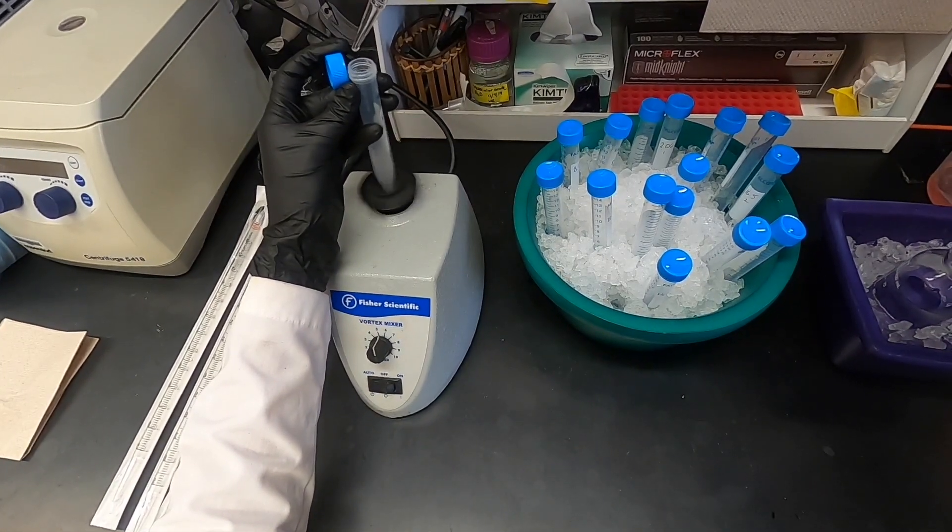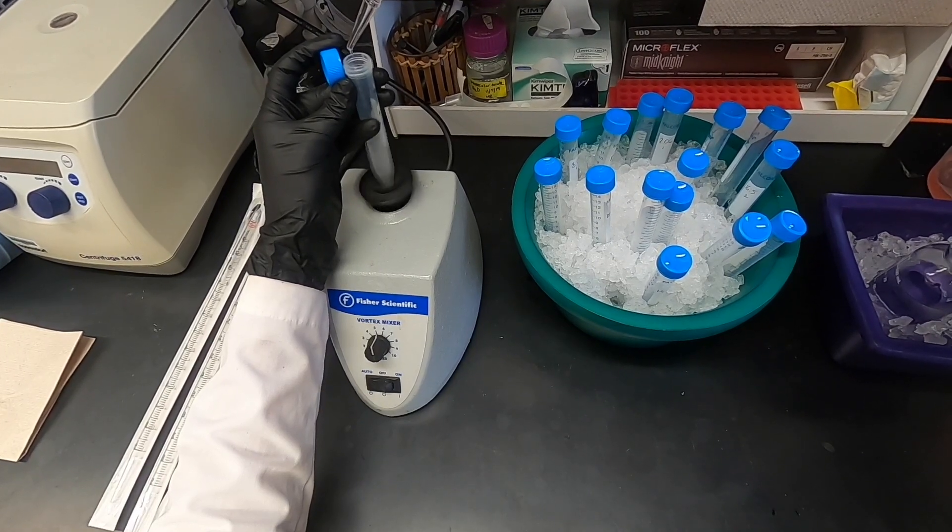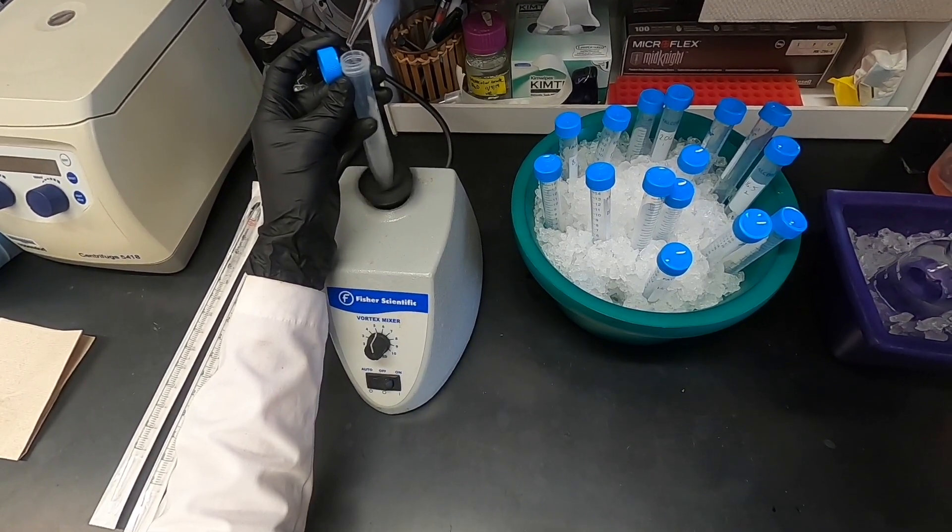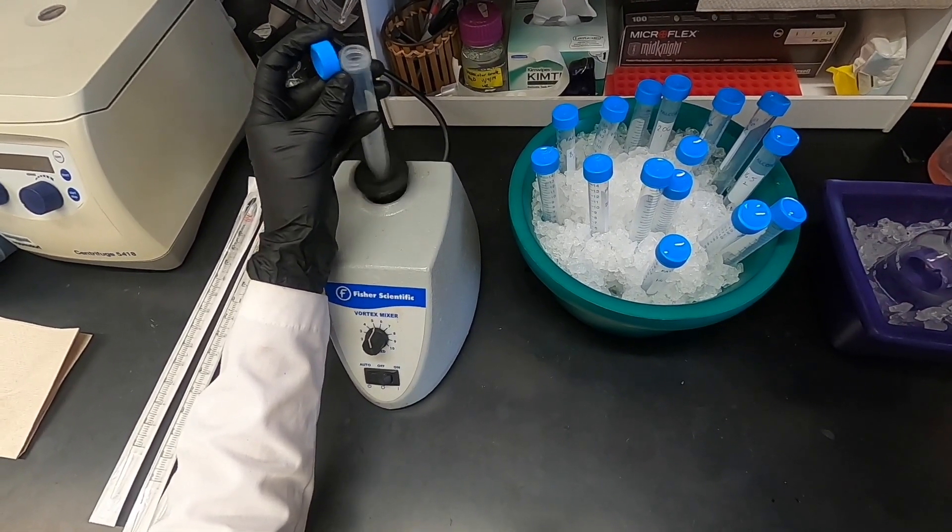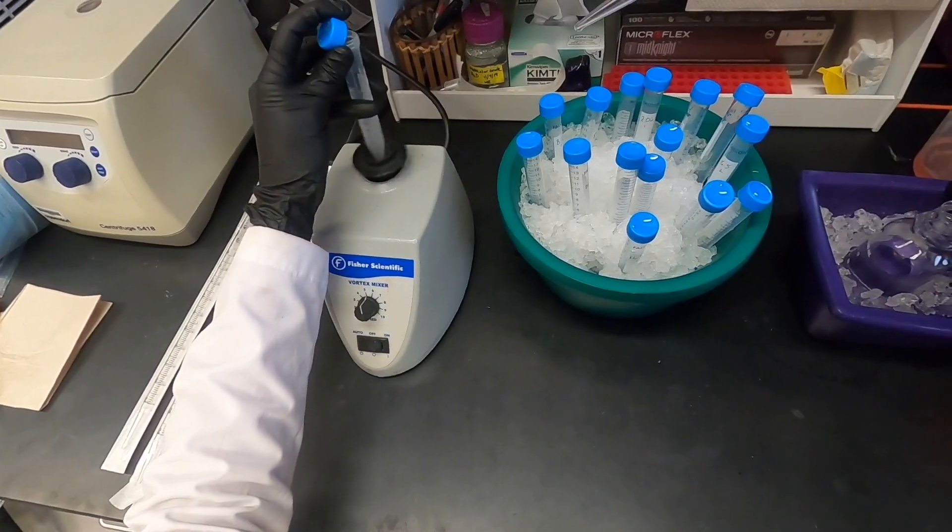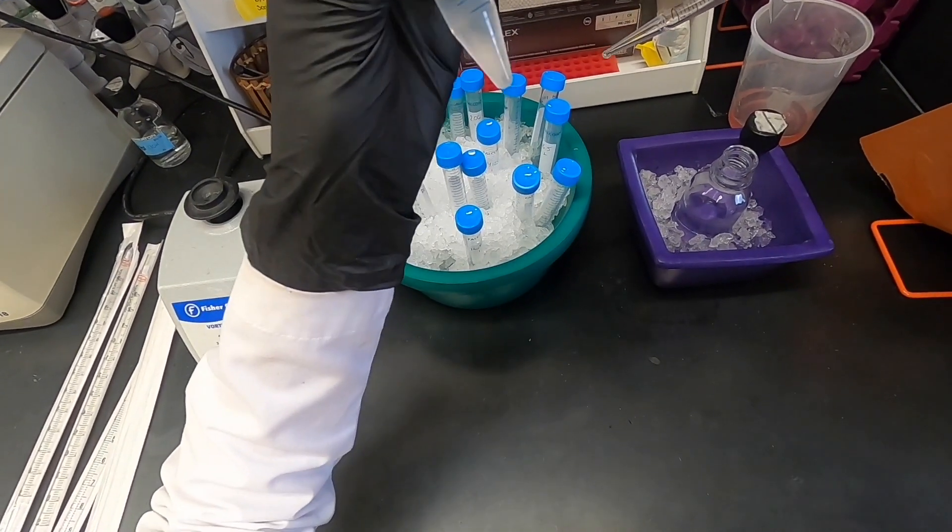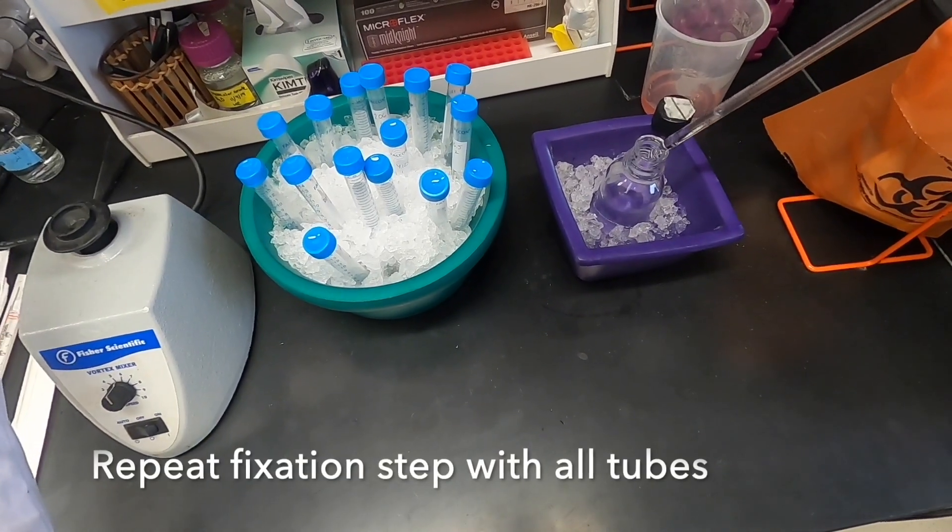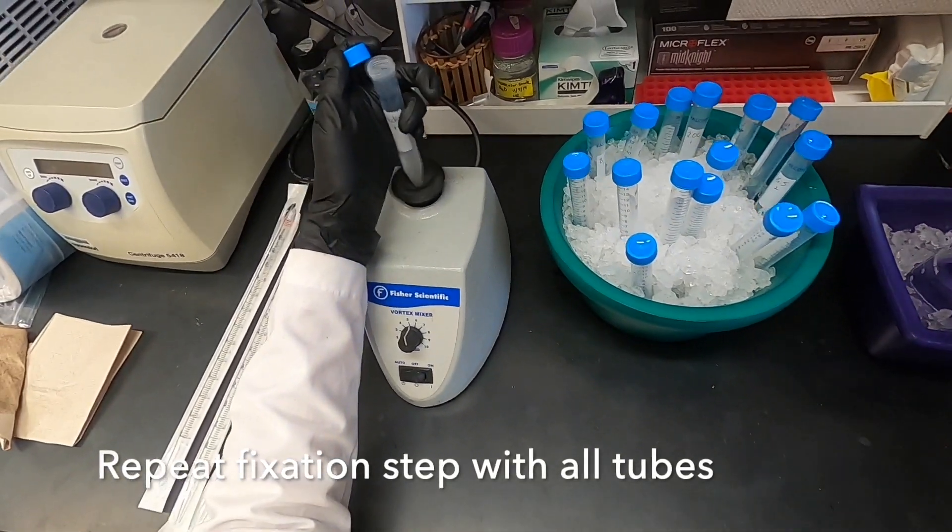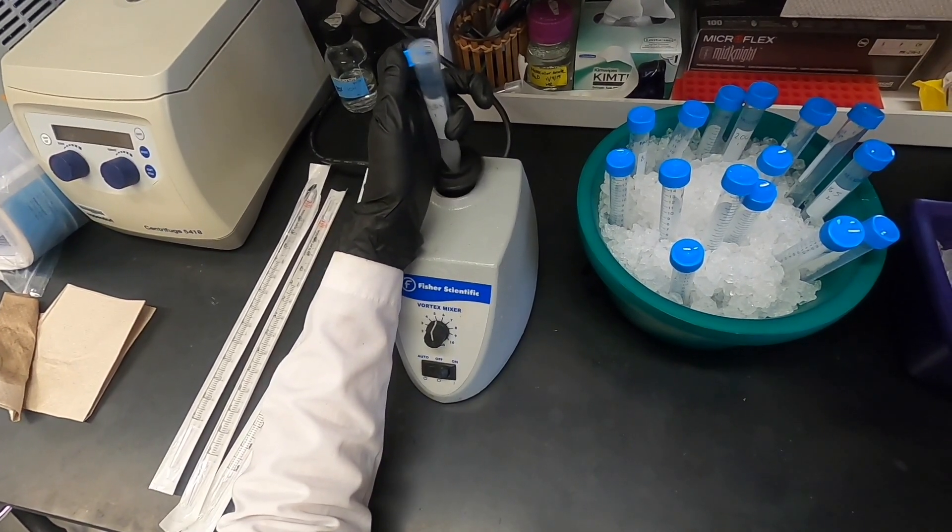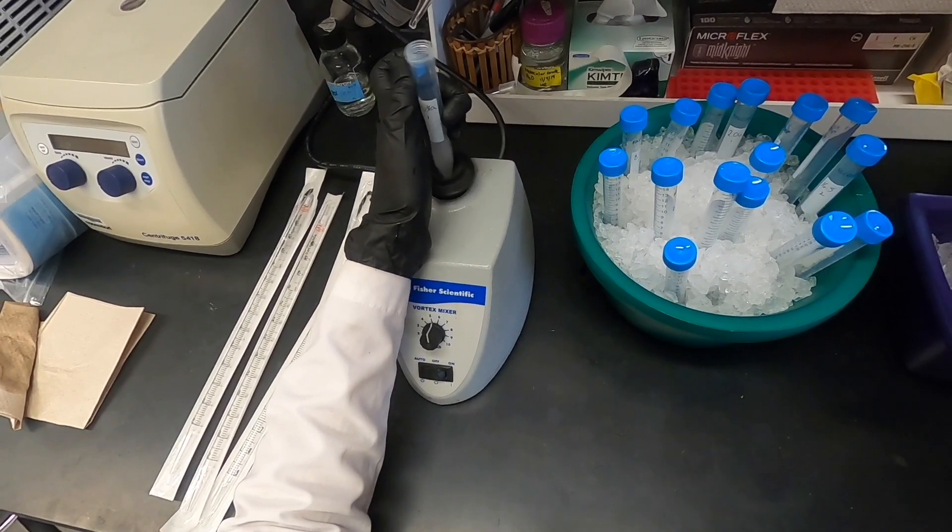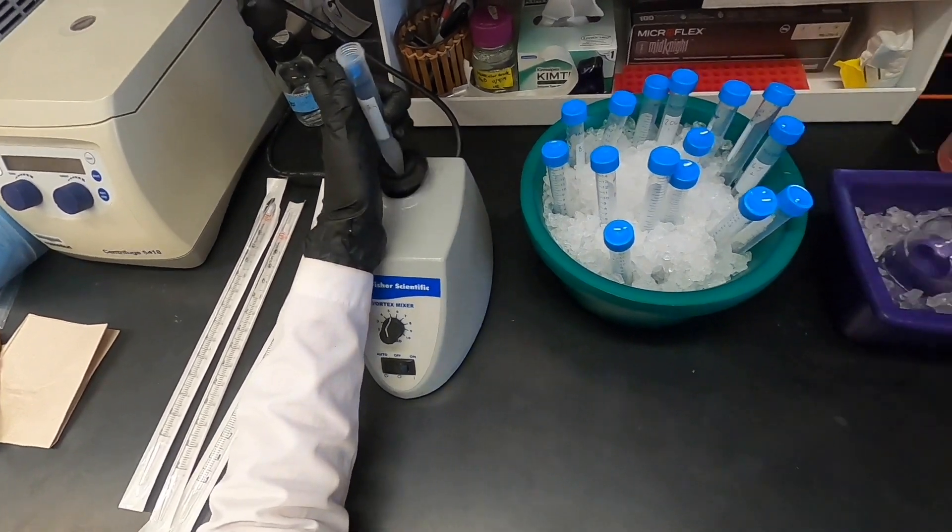Ethanol fixation and permeabilization is an important step when working with PI. If you remember from our cytotoxicity assay, PI is not permeant to living cells. Therefore, permeabilizing them with ethanol will allow the PI to enter the cell membrane and stain the DNA. We will now incubate our tubes with 70% ethanol for 15 minutes on ice.